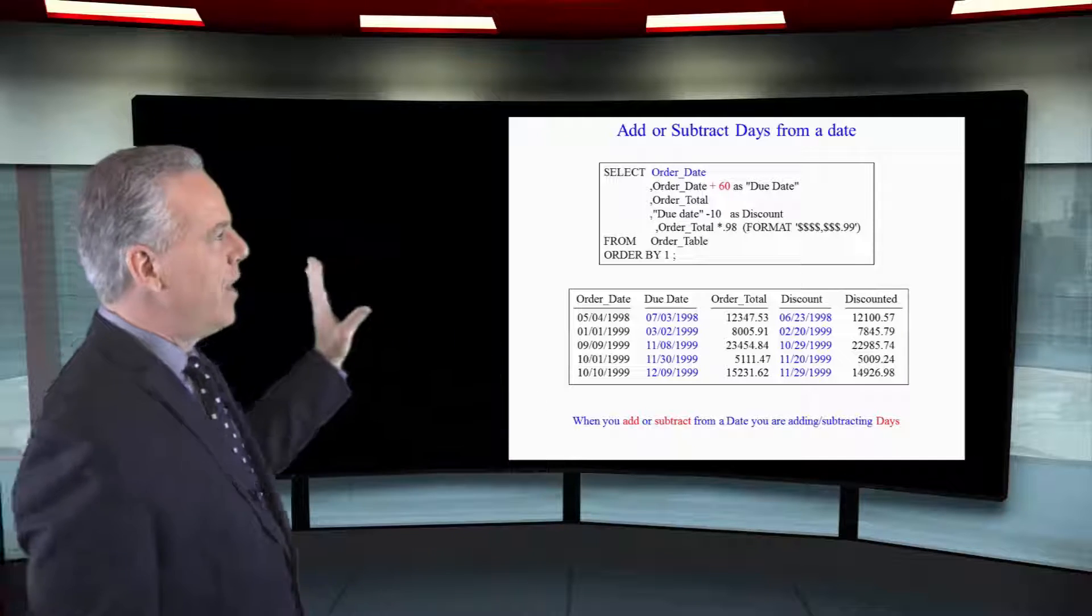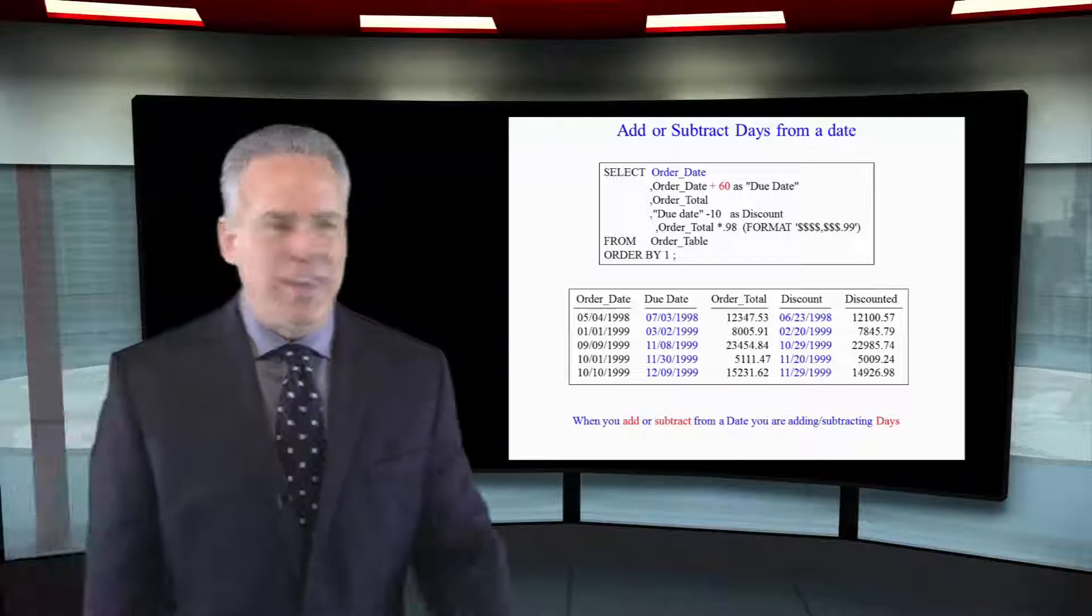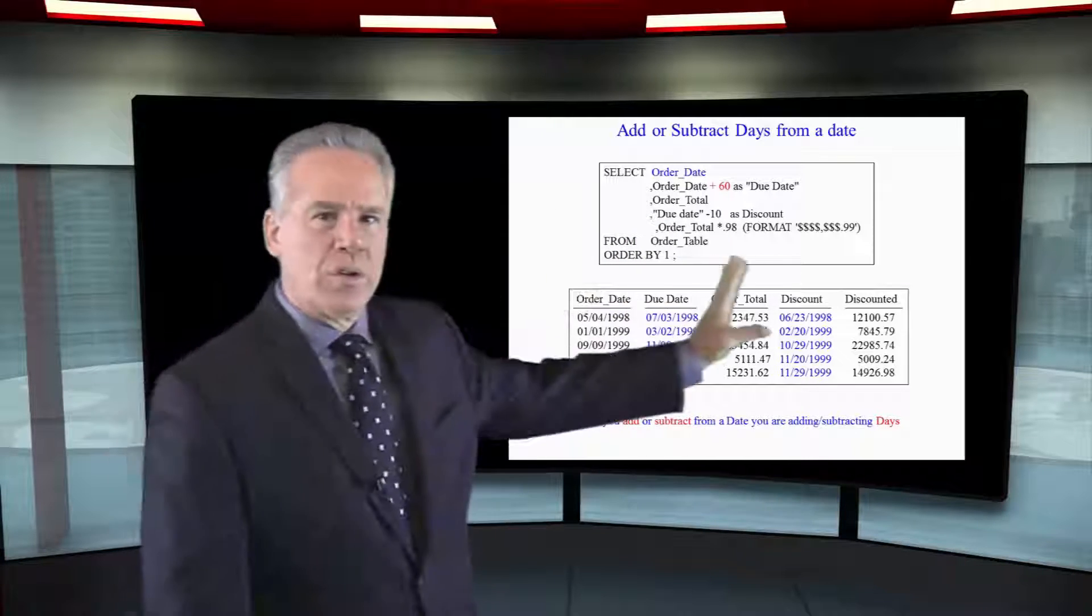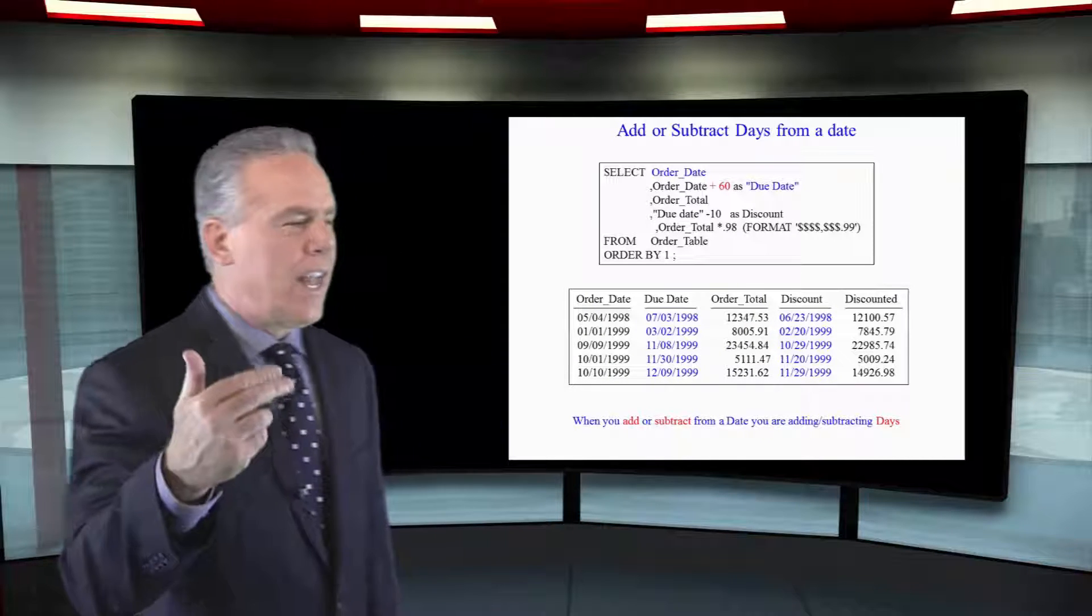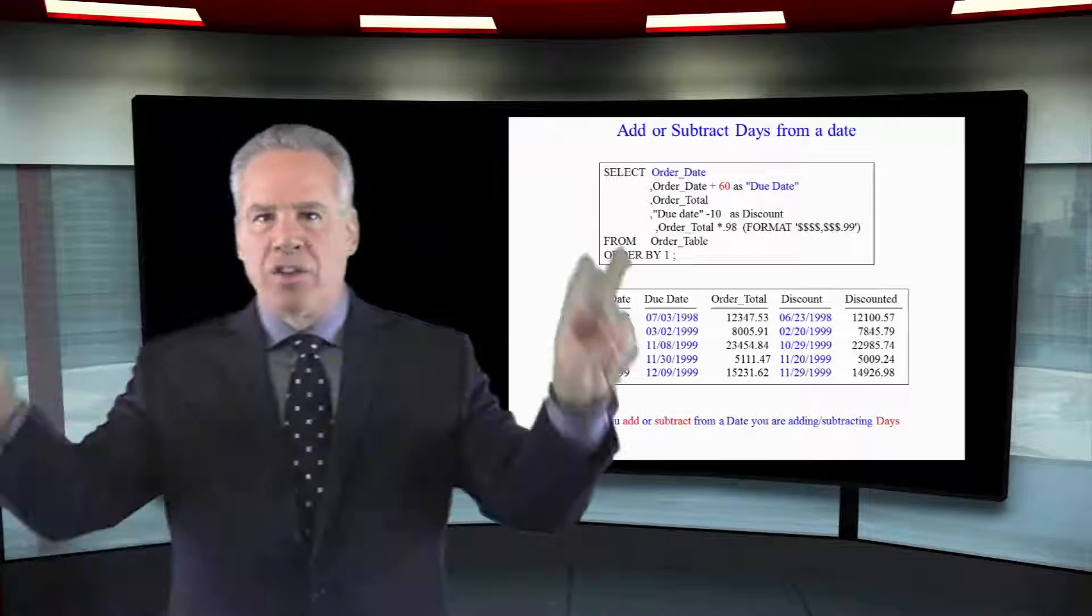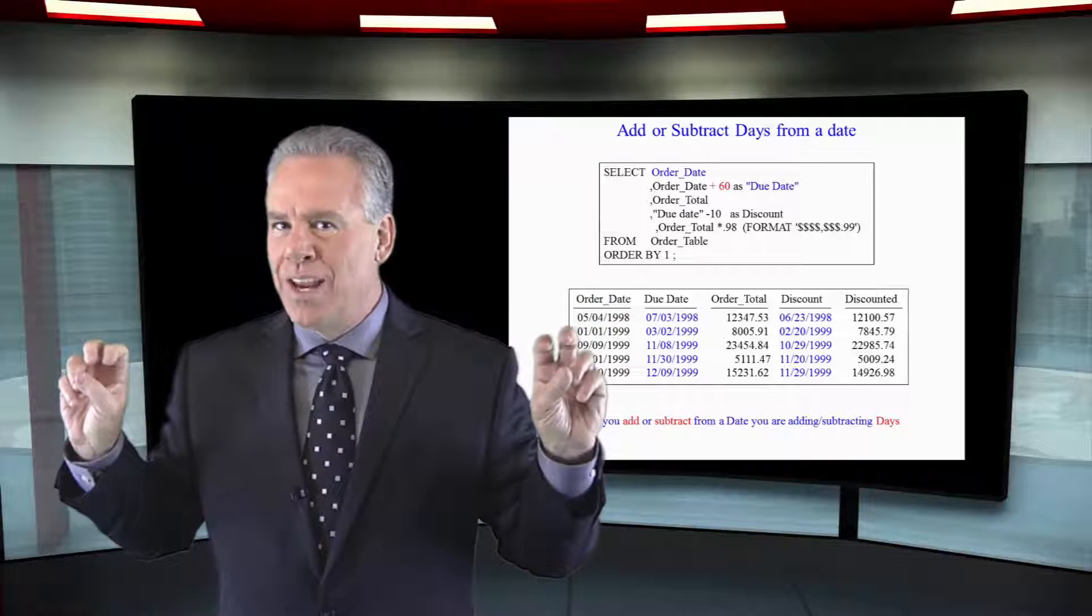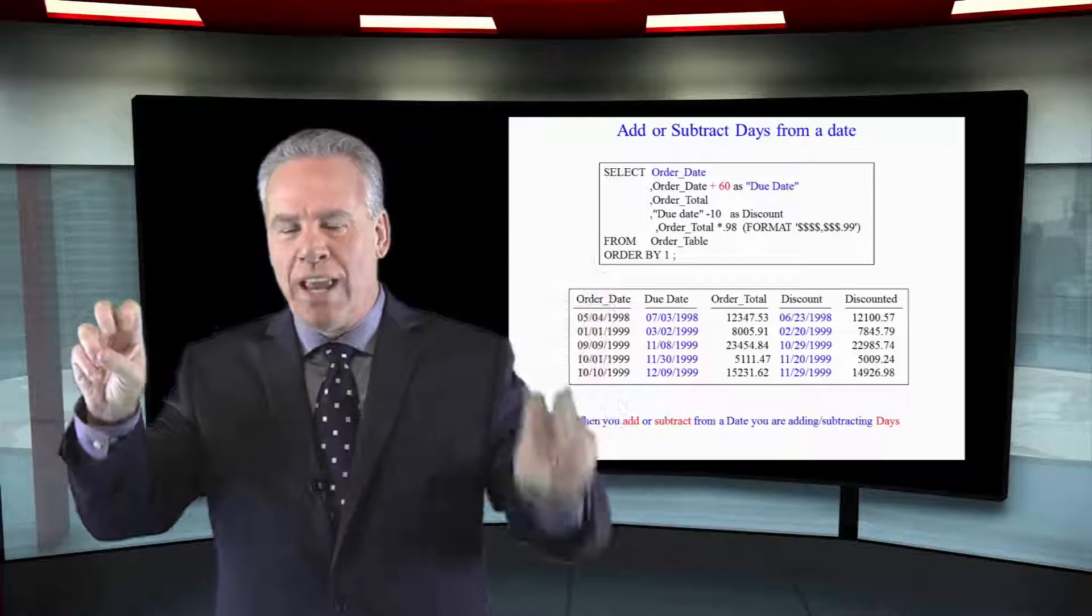As you can see here, they've got the order date plus 60, 60 days to pay. Then we say hey, you owe this order total. Now this is very interesting. Notice that we had an alias in the second column: order date plus 60 as double quote due date. There's a space in between due and date, so we have to have the double quotes in the alias.